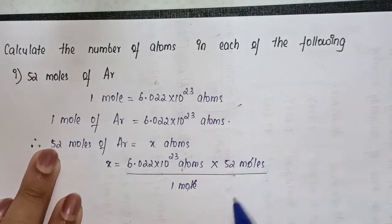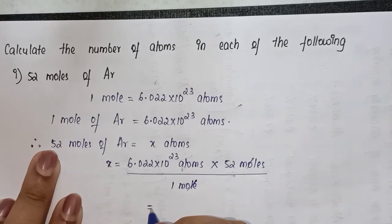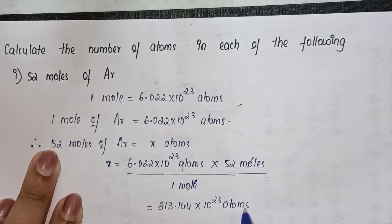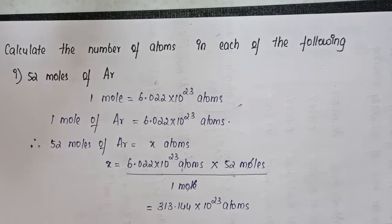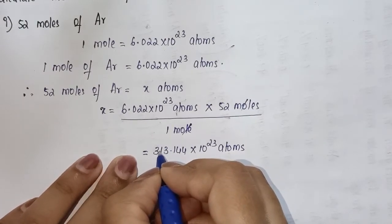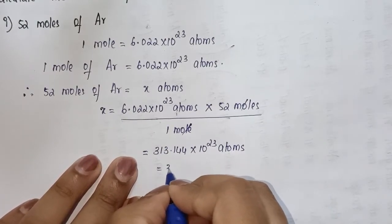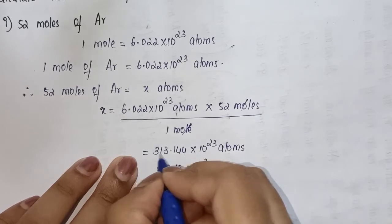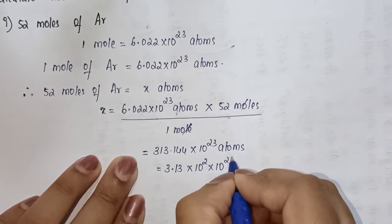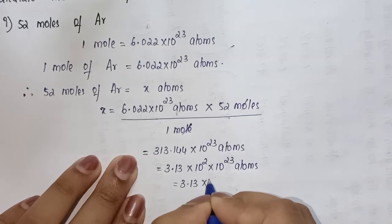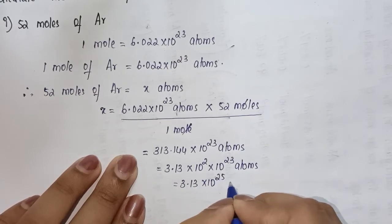The mole units cancel out, and when we multiply we get 313.144 × 10²³ atoms. Now we convert to proper scientific notation by shifting the decimal 2 places, giving us 3.13 × 10² × 10²³ atoms. Adding the exponents: 3.13 × 10²⁵ atoms.